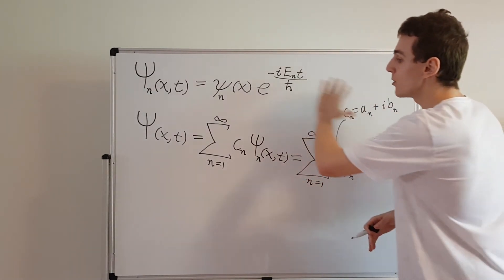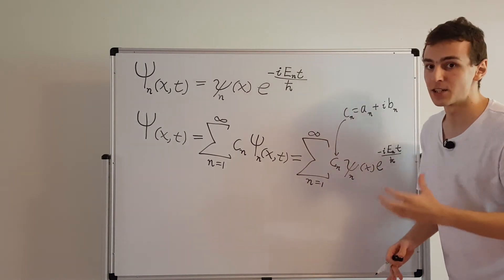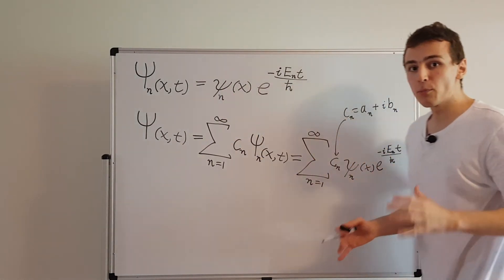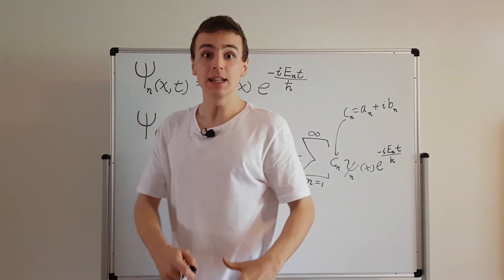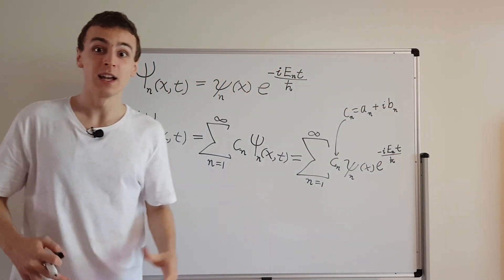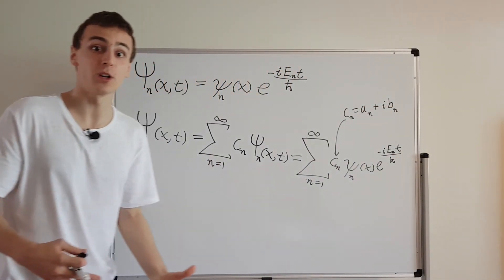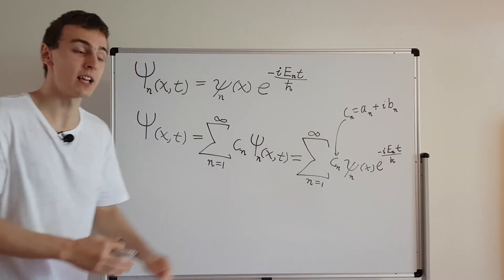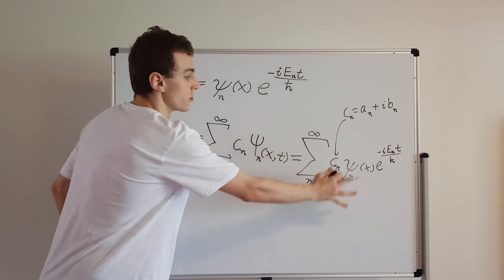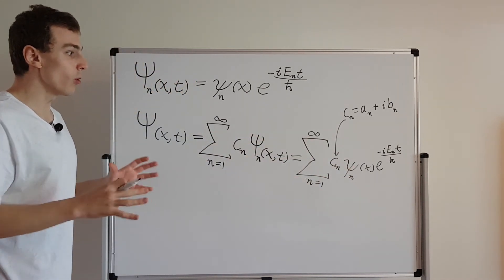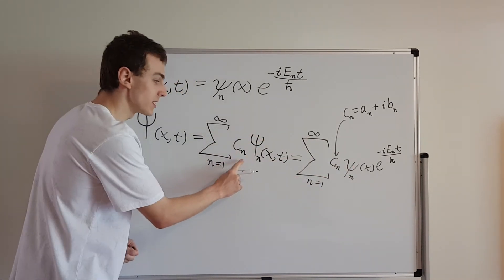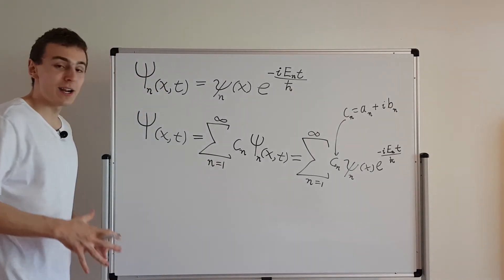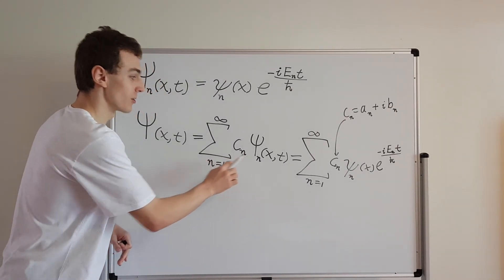This is how the general solution gets constructed from these separable solutions. The most important message of this video is that you can take the separable solutions found using the method of separation of variables, take a linear combination of them, and that gives you the general solution. All you have to do is find these constants c_n — and that's easier said than done. There's quite a lot of mathematical machinery that goes into finding these constants.